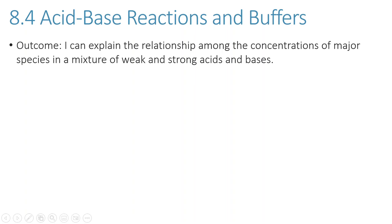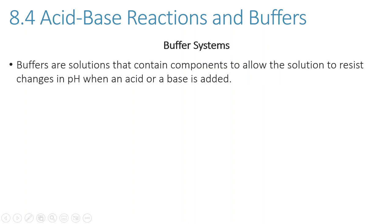Our outcome is: I can explain the relationship among the concentrations of major species in a mixture of weak and strong acids and bases. We're going to be looking at buffers, which are mixtures of strong and weak species. Buffers are solutions that contain components that allow the solution to resist changes in pH when small amounts of an acid or base are added.